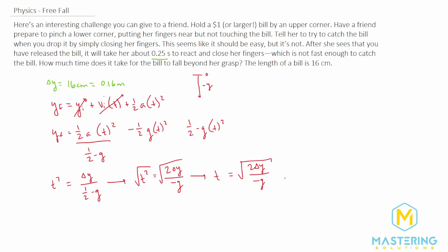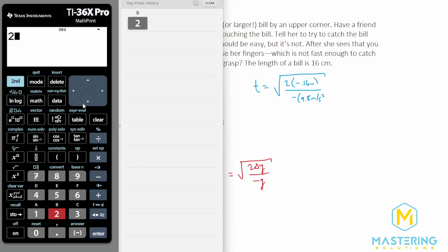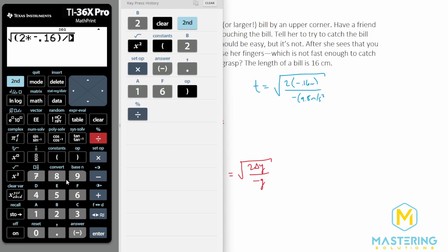Now we need to plug in our numbers. We have t equals the square root of 2 times delta y, which is negative 0.16 meters, divided by negative 9.8 meters per second squared. When we go to the calculator, the square root of 2 times negative 0.16 divided by negative 9.8 gives us 0.18.